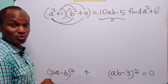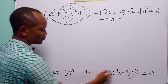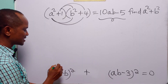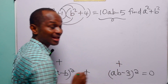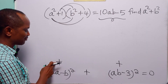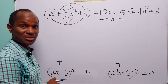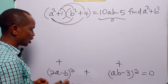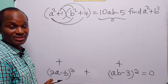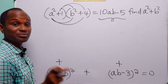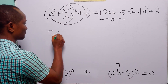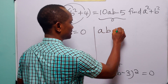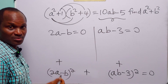What information do we get from this line? We have that the sum of two squares is equal to 0. A square must always be positive, so this is positive and that is positive. This equation is telling us that a positive number plus another positive number equals 0, which is impossible — except if those two numbers are 0 themselves. So the only way this equation holds is if (2a minus b) equals 0 and (ab minus 3) also equals 0.